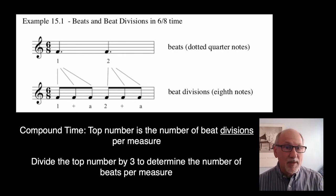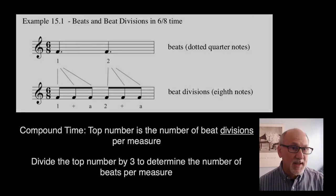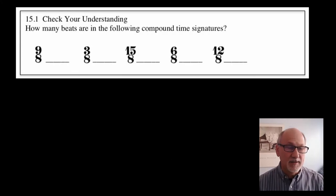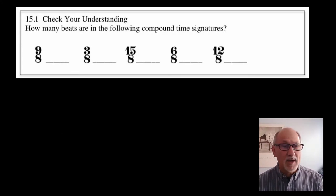Because the beats in compound meter can always divide evenly into 3 parts, the top number of compound time signature will always be a multiple of 3, such as 3, 6, 9, 12. Let's go ahead and look at Check Your Understanding 15.1 together. It asks, how many beats are in the following compound time signature?